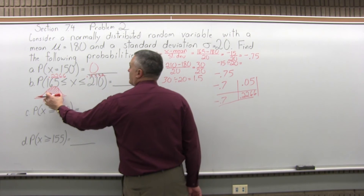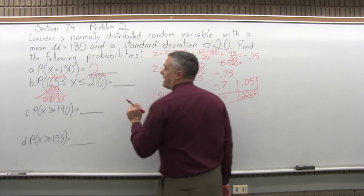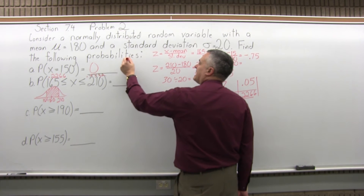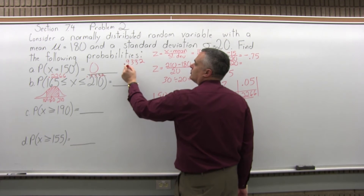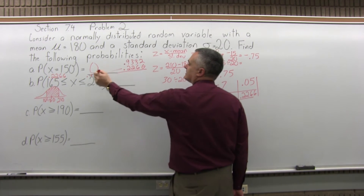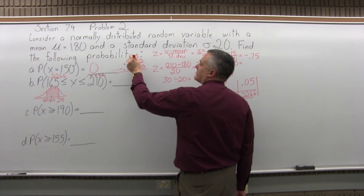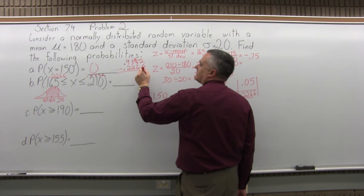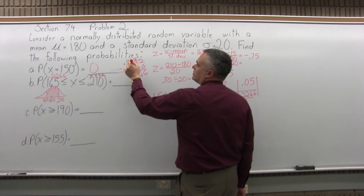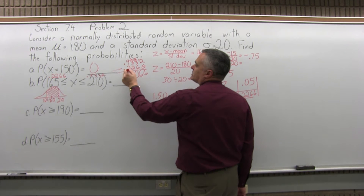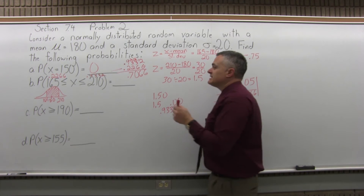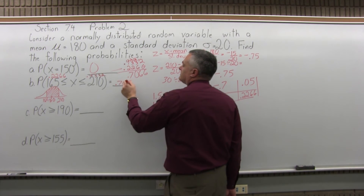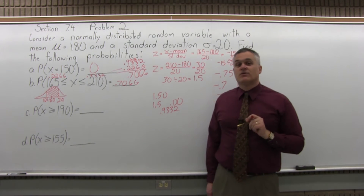To find the probability of being between 165 and 210, subtract the two chart values: 0.9332 minus 0.2266. Working through the subtraction gives 0.7066. That's almost a 71% probability, and that is the answer for Part B.